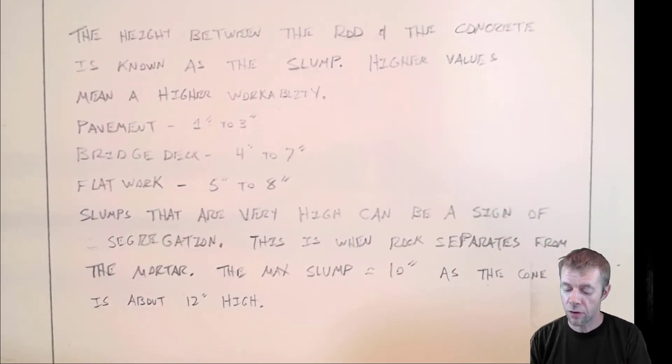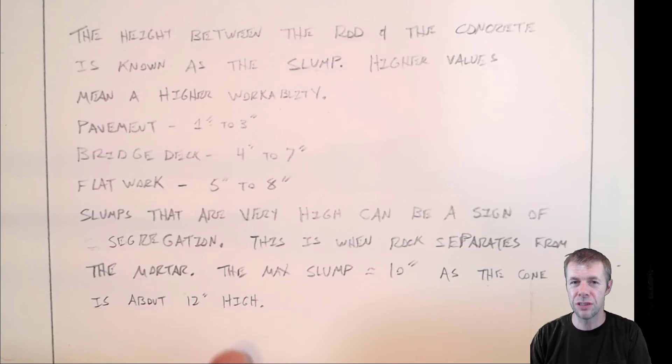Slumps that are very high can also be a sign of segregation. What do I mean by very high? Well, it means something around 10 inches or so. And segregation, what's that? Well, that's when the rock separates away from the mortar. We'll talk more about that coming up. But you can imagine if there's just a bunch of rocks left, then the slump's going to be really, really high. But the slump can never go higher than 12 inches and really 11 inches is about the maximum because that's the height of the cone.